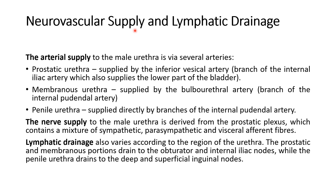About the neurovascular supply and lymphatic drainage: the three regions of the urethra have different arterial, nerve, and lymphatic supply. The arterial supply of the prostatic urethra is the inferior vesical artery; the membranous urethra is supplied by the bulbourethral artery; and the penile urethra is supplied by branches of the internal pudendal artery. Nerve supply is from the prostatic plexus. Lymphatic drainage varies by region: the prostatic and membranous portions drain into the obturator and internal iliac nodes, while the penile urethra drains into the deep superficial inguinal nodes.